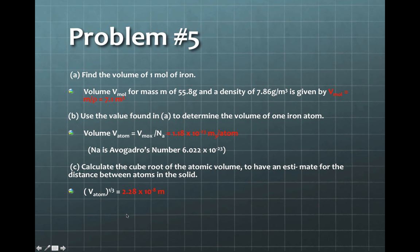So to find the molar volume, we consider the molar mass and the density of iron and take their ratio, and we get 7.1 cubic meters. The atomic volume is merely the ratio of the molar volume divided by Avogadro's number. Thus we get 1.18 times 10 to the minus 23 meter cube per atom.